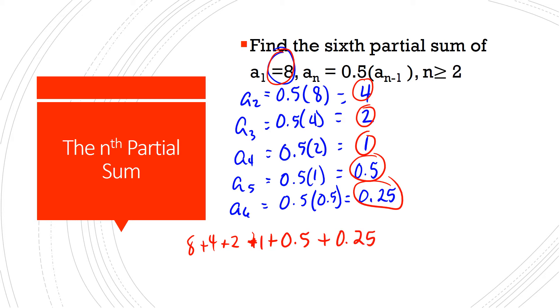8 and 4 is 12. 12 and 2 is 14. 14 and 1 is 15. And then we got a half and a quarter, that's 3 quarters. So it is going to equal 15.75. So the sixth partial sum of this series is 15.75. Not too bad. We'll go take a look at another.